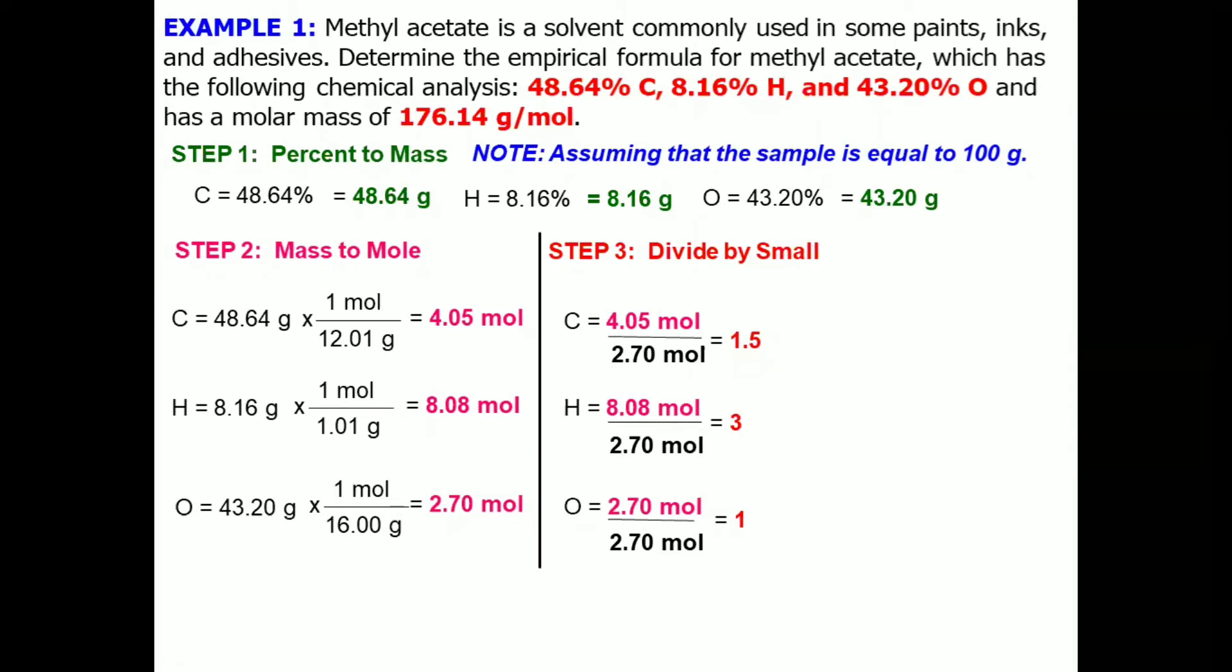Since our target is to get the whole number ratios and carbon has decimal place or point, we have to proceed to fourth step which is multiply till whole.